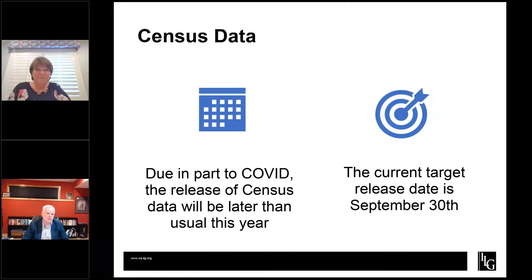The population deviation would still need to be zeroed out once the actual data comes out. The census is talking about releasing what they call the legacy format data sometime in late August — though that's a moving target. That's data not in the nice, cleaned-up format that will be easily loaded into mapping programs, but we, together with various partners, are going to be processing that — so probably a couple weeks after that August release, we would have that legacy data in a usable format.